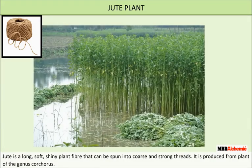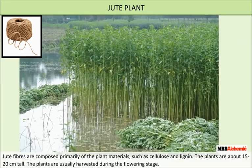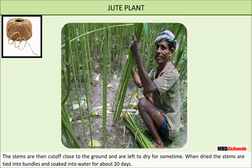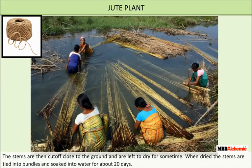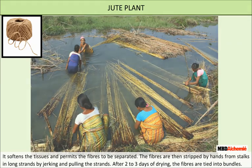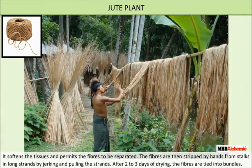Jute is a long, soft, shiny plant fiber that can be spun into coarse and strong threads. It is produced from plants of the genus Corchorus. Jute fibers are composed primarily of plant materials such as cellulose and lignin. The plants grow about 15 to 20 cm tall and are harvested at the flowering stage. Stems are cut close to the ground, dried, tied into bundles, and soaked in water for about 20 days to soften the tissues. Fibers are then stripped from the stalks by hand in long strands. After 2-3 days of drying, the fibers are tied into bundles.